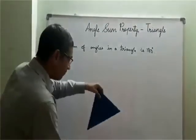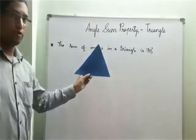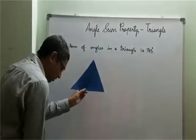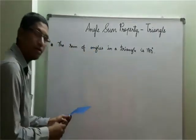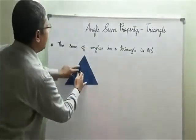So children, this is how the triangle is obtained. Now let us mark these angles as 1, 2 and 3 children. So I will mark this angle as angle 1,